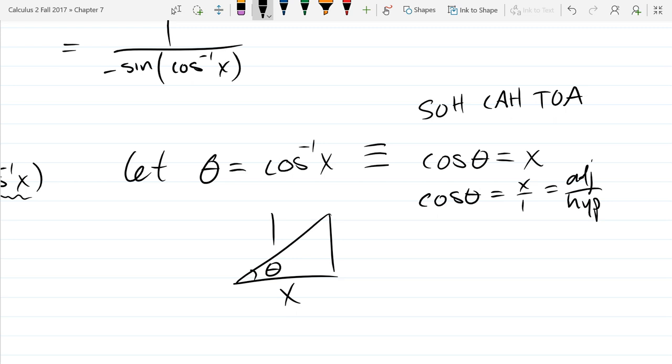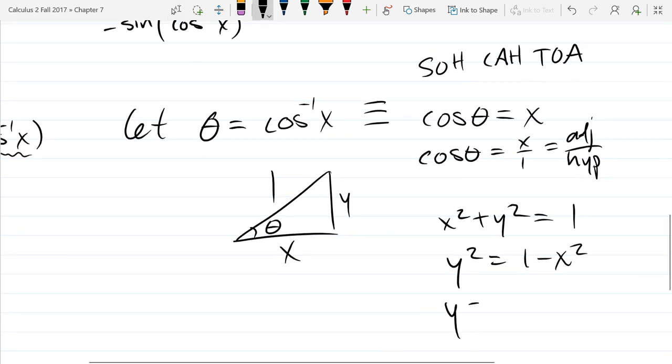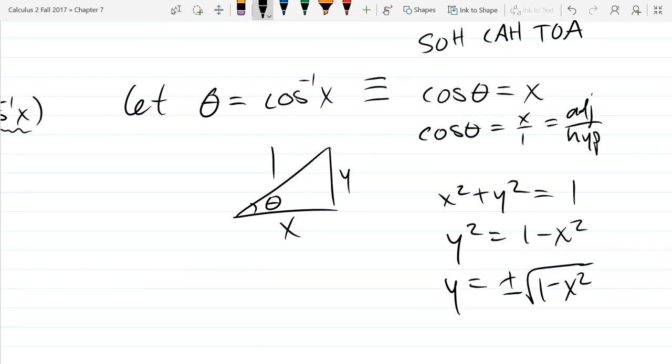And I'm going to use Pythagorean theorem. If I call the other side y, x squared plus y squared equals 1. So I want to know what y is. So y squared is 1 minus x squared. And then y is plus or minus square root 1 minus x squared. And whenever you do these problems, you're always going to pick the positive. The positive square root. So y is going to be square root 1 minus x squared.